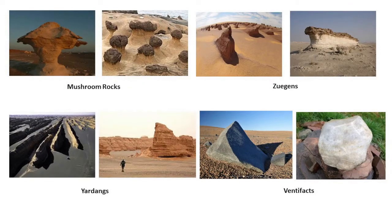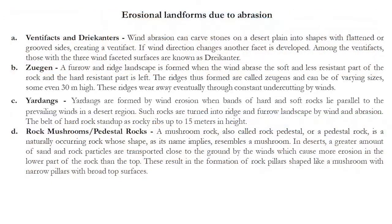Yardangs and zeugens look similar, but there is one key difference: the orientation of the underlying rocks. Yardangs are formed by wind erosion when bands of hard and soft rocks lie parallel to the prevailing winds in a desert region. The soft rocks get easily eroded and the hard rocks remain as relatively stable features, forming a ridge and furrow landscape. The belt of hard rock stands as rocky ribs up to 15 meters in height.